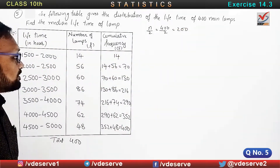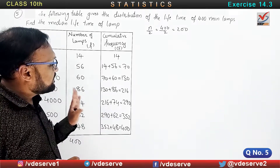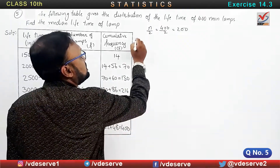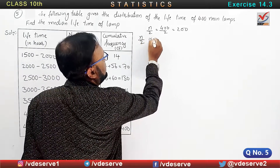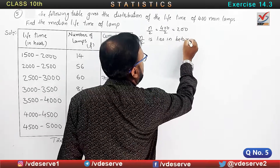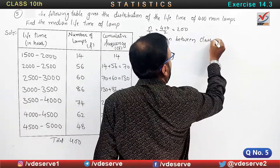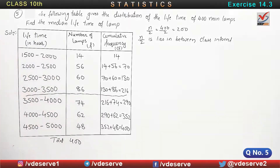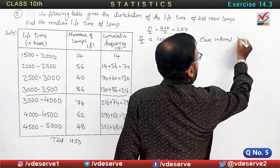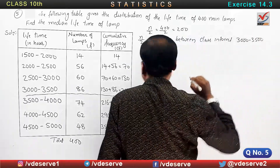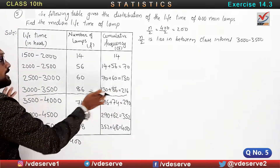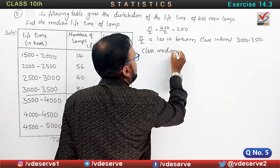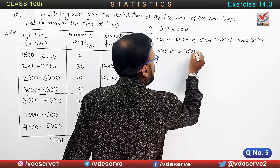So this 200 lies in the cumulative frequency in between. The class interval for the median lies in between, and the class median is 3000 to 3500.